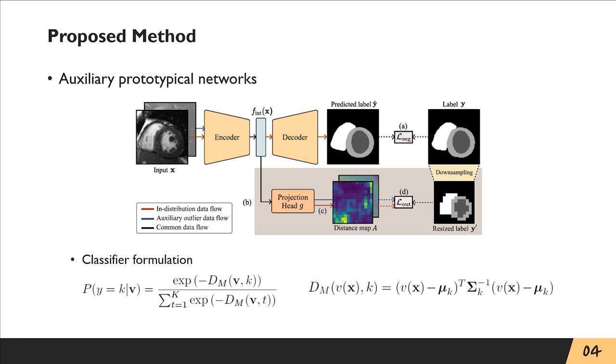By doing so, we formulate a distance map A, which can analyze the distance between each pixel embeddings and classwise anchors. The distance map can highlight potentially anomalous regions.